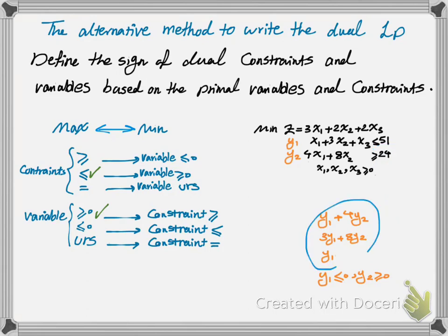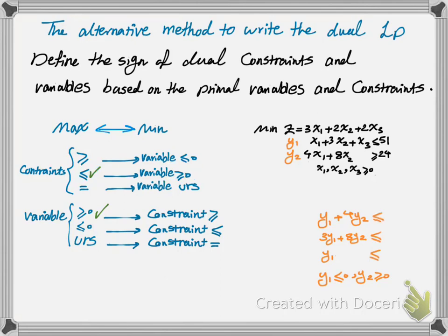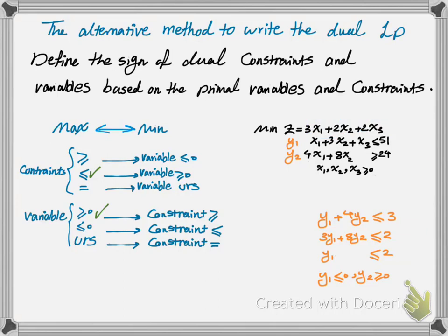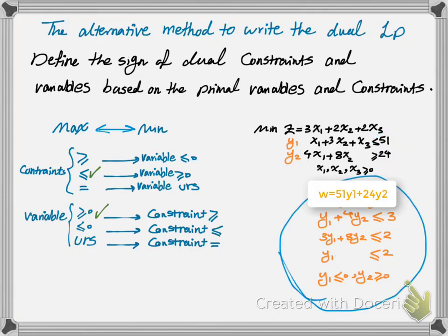Then you have to define the sign for your constraints in the dual, which is defined based on the sign of your variables in the primal problem. In the primal problem all your variables are greater than or equal to 0, and therefore your dual is going to have everything less than or equal. So everything is going to have a less than or equal sign. For the right hand side I bring the coefficient of the objective function — so 3 comes here, 2 comes here, and 2 here. Then I write the objective function using the right hand side of my primal problem. So now I've written the dual programming problem of my primal without normalization.